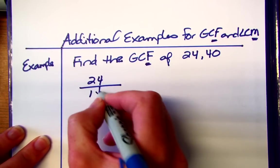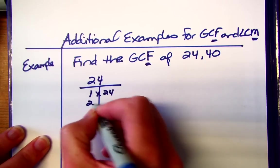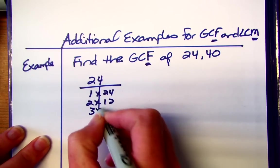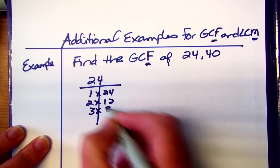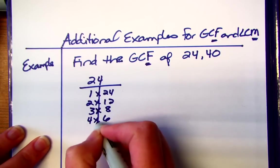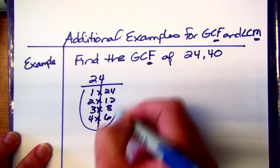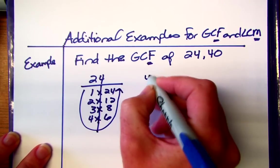So 1 times 24, 2 times 12, 3 times 8, 4 times 6. 5 doesn't work and then we're back to 6.